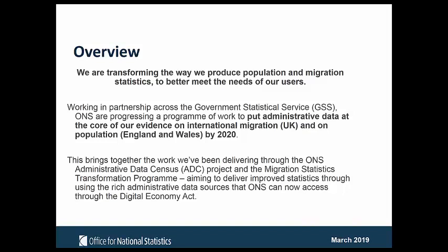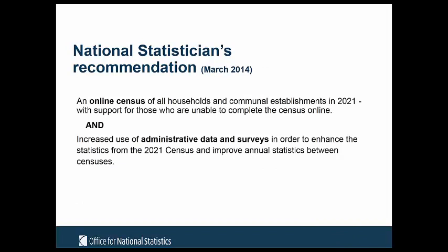We want to deliver improved statistics by using the wealth of administrative data available to us, which we can now access through the Digital Economy Act. Casting our minds back to 2014, the National Statistician at the time recommended that in 2021 we would do an online census of all households and communal establishments, and also progress work to use an increased amount of administrative and survey data to produce the best possible outputs for the 2021 census and to make improvements for annual statistics between censuses.